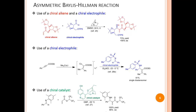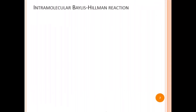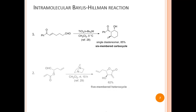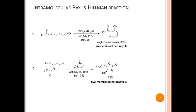As mentioned earlier, an intramolecular Bayliss-Hillman reaction produces various synthetically useful carbocycles and heterocycles. The first example shows an intramolecular Bayliss-Hillman reaction producing a six-membered carbocycle in 85% yield. The second example shows an intramolecular Bayliss-Hillman reaction producing a five-membered heterocycle in 62% yield.